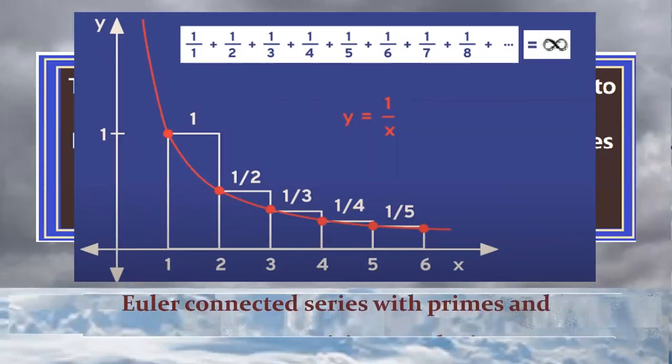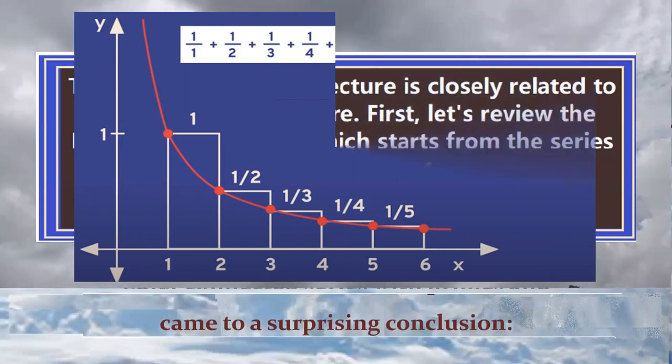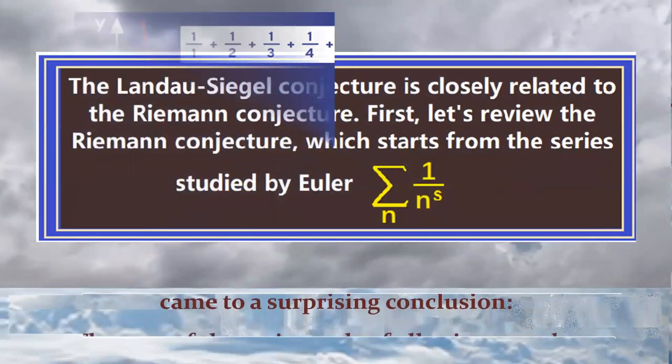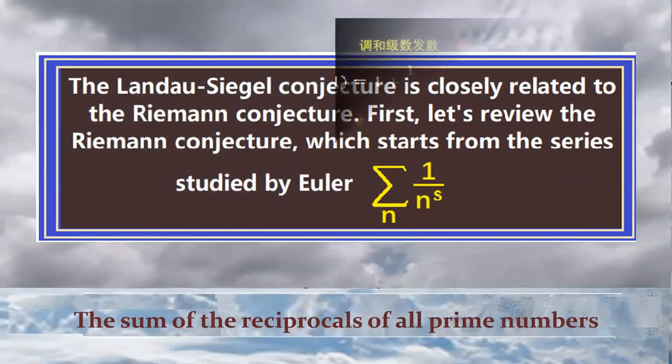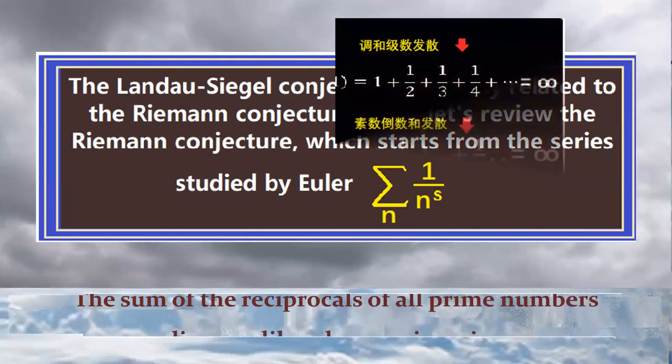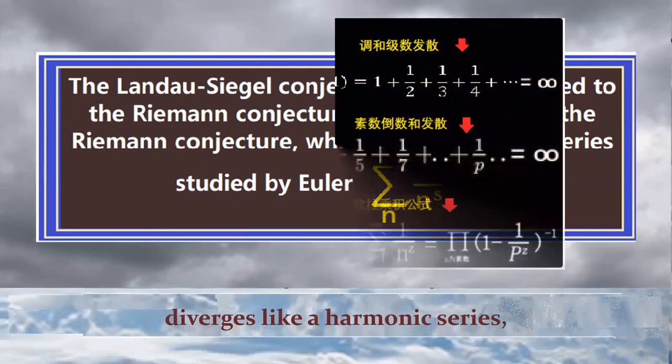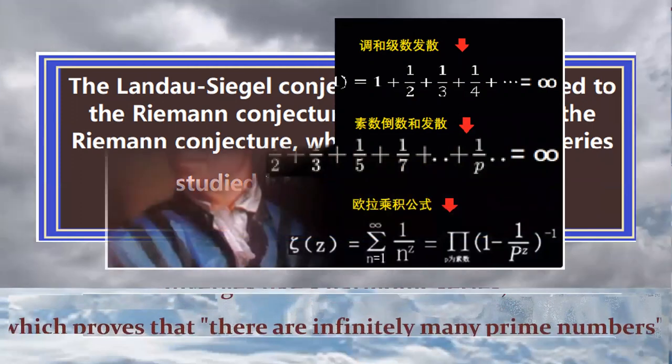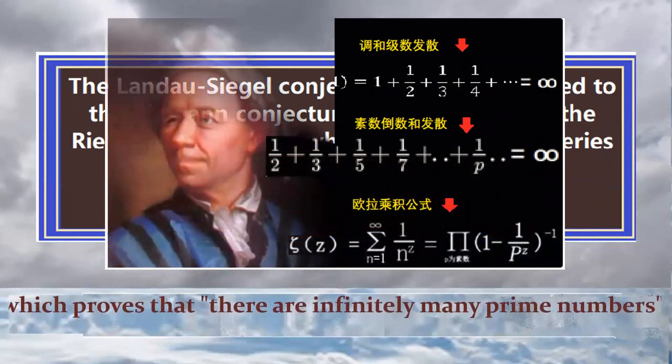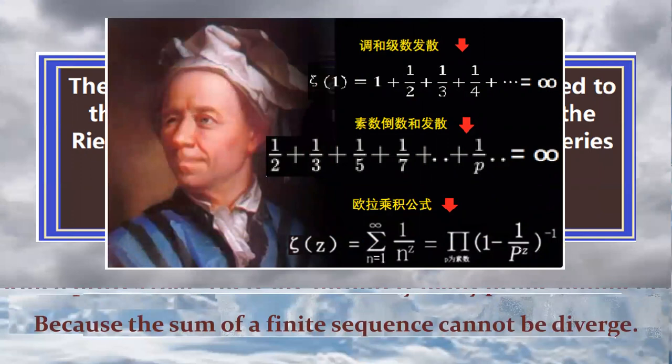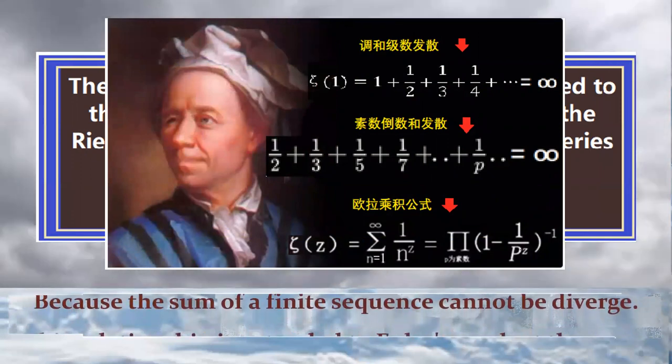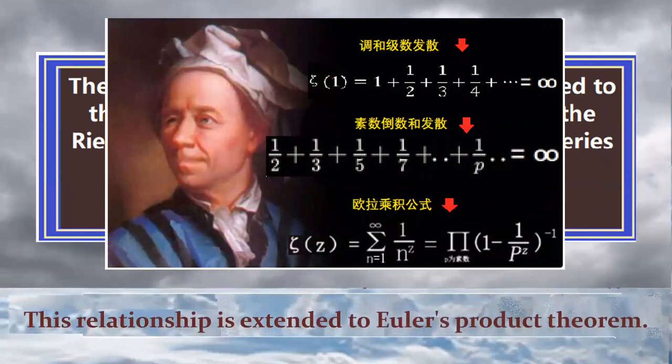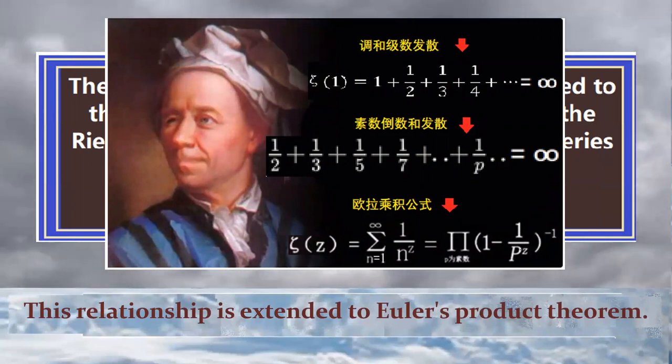S greater than 1, the series converges, S equals 1, it does not converge. Euler connected series with primes and came to a surprising conclusion. The sum of the reciprocals of all prime numbers diverges like a harmonic series, which indirectly proves that there are infinitely many prime numbers. Because the sum of a finite sequence cannot be diverged. This relationship is extended to Euler's product theorem.